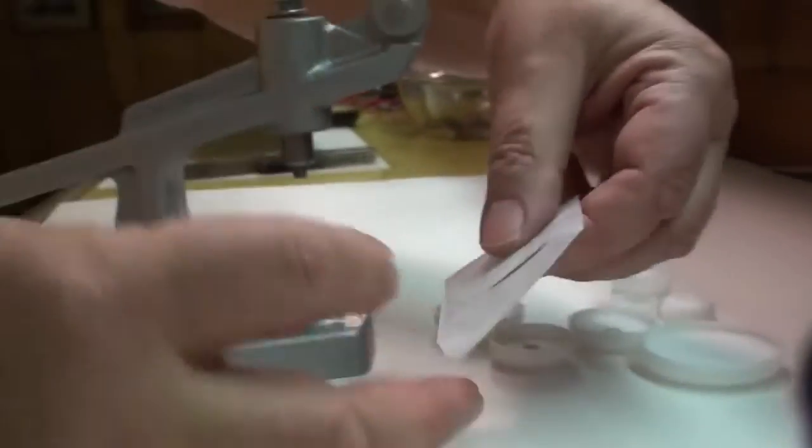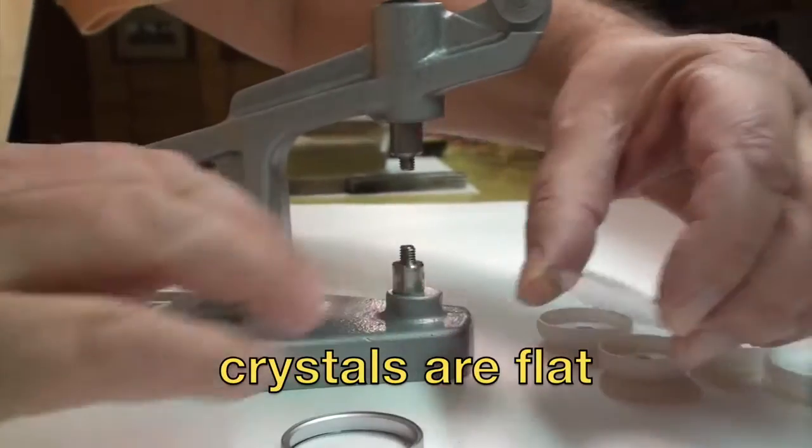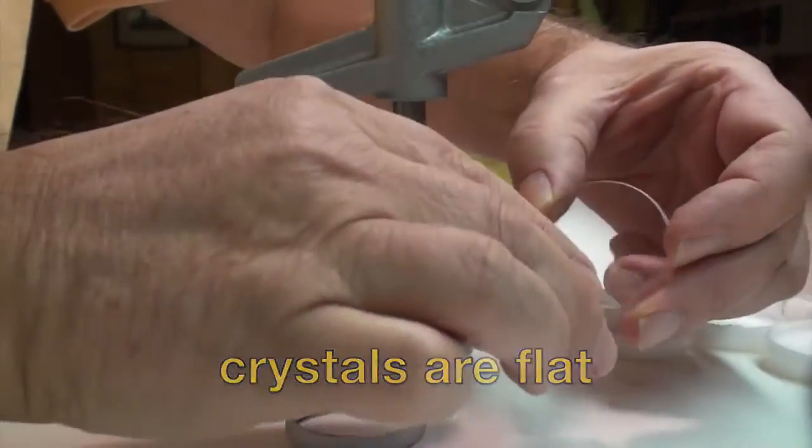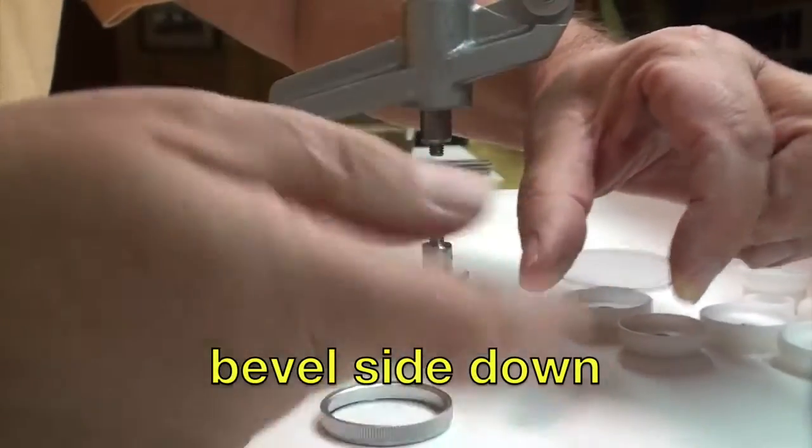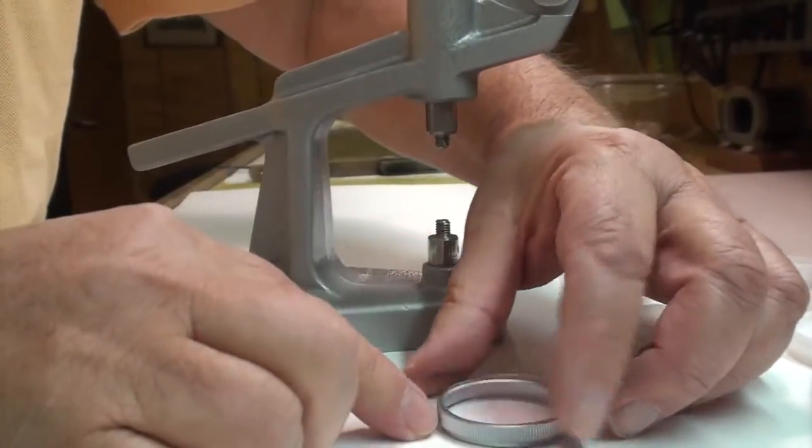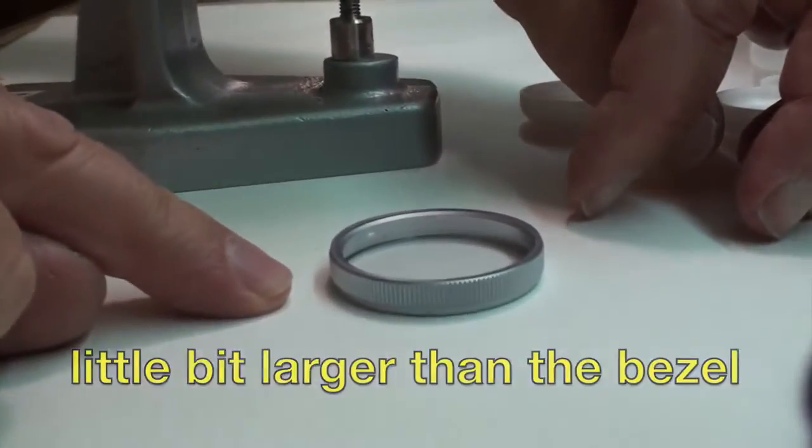And then we have to get a crystal. Crystals are flat. There's a beveled side that has to be down, and it has to be a little bit larger, otherwise it'll fall out.